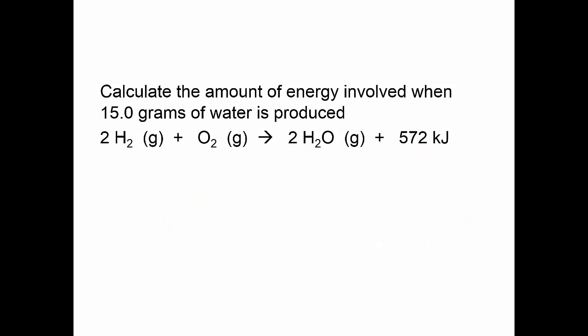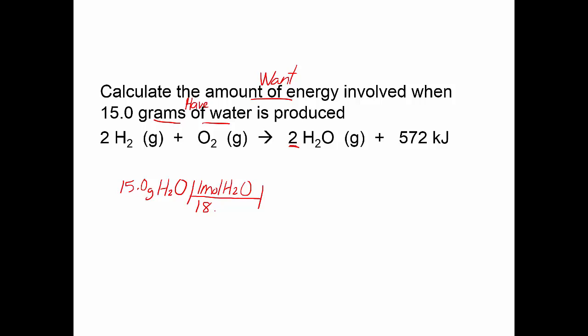Being able to look at a reaction and where the heat is placed, you can tell a lot of information about it. Now a couple of problems on the stoichiometry. Calculate the amount of energy involved when 15 grams of water is produced. Notice you have to have a balanced equation — it has coefficients, so I assume it's balanced. 15 grams of water is my given, and energy is what I want. Remember this is moles — that's 2 moles of water. For every 2 moles of water, I will release 572 kilojoules. But I wasn't given moles, so the first thing to do is convert grams to moles.